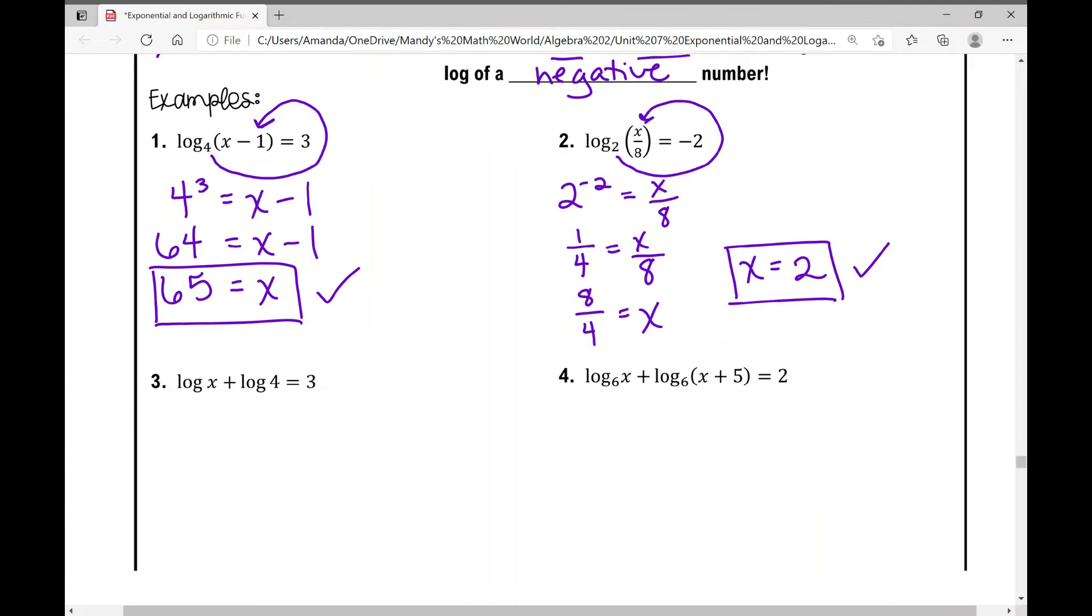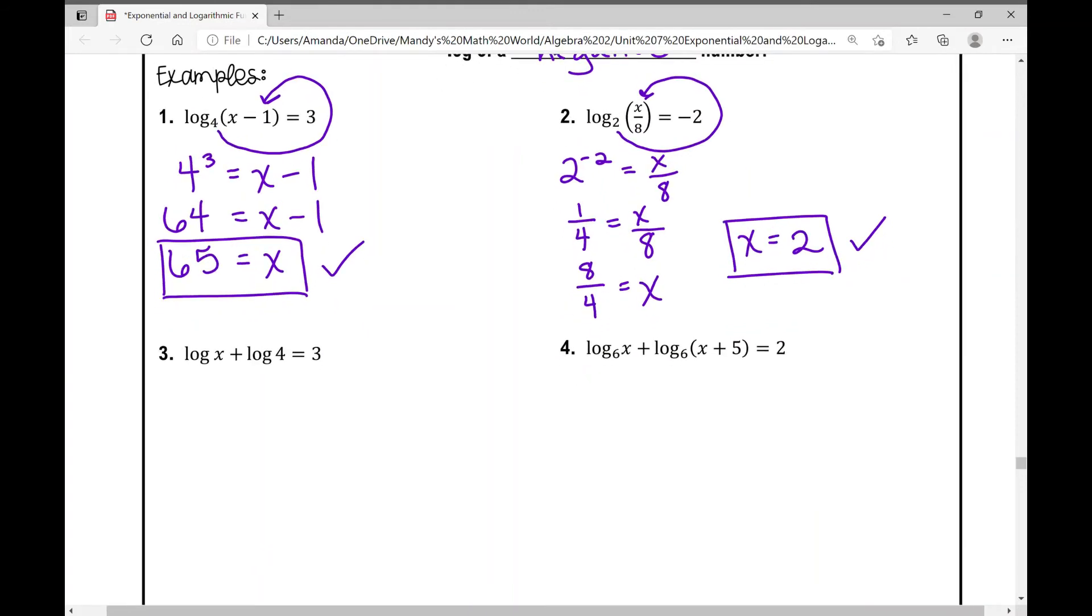Looking at number three. So three and four are our first examples where we do have to condense the logarithms to a single log. So if I have log of x plus log of four, same base, that base would be 10. When I'm adding, that means when I condense them, I can multiply. Four times x equals three.